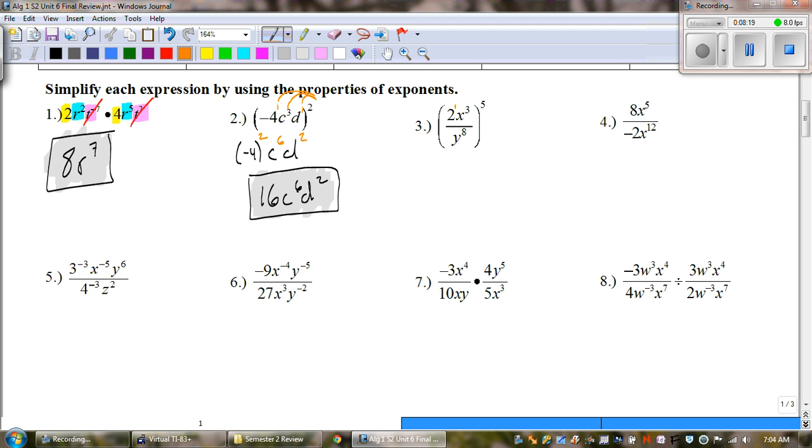Number 3. Same thing. I'm going to give that 2 a 1 and we're going to distribute that to everything. First way we write it is with our new exponents and then we simplify. So we get 2 to the 5th, 3 times 5 gives us x to the 15th and 8 times 5 gives us y to the 40th. We already did 2 to the 5th once today and that's 32. x to the 15th y to the 40th.